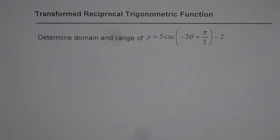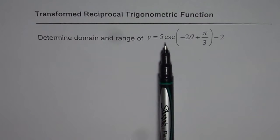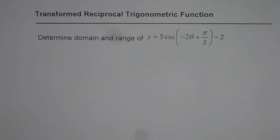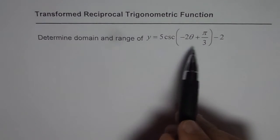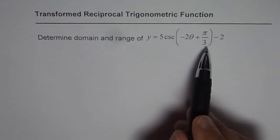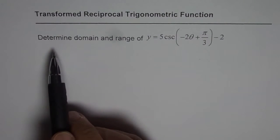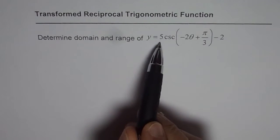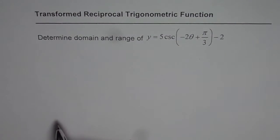The question before us is: determine the domain and range of y equals 5 cosecant of (minus 2 theta plus pi by 3) minus 2. We really want to sketch this function, but before sketching, let us understand the function itself. We will do sketching in part 2, so now we will just concentrate on writing the domain and range.